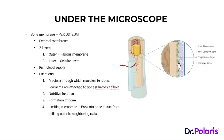The periosteum as a whole is richly supplied with blood vessels — the periosteal vessels. Three important points: it is an external membrane covering the entire surface of the bone, excluding the articular cartilage where there is no periosteum. It has two layers — the outer fibrous and the inner cellular — and it has a very rich blood supply.